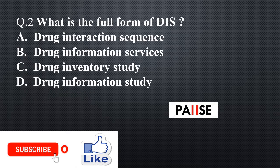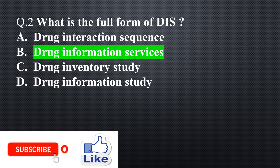Question 2. What is the full form of DIS? Option A: Drug Interaction Sequence, Option B: Drug Information Services, Option C: Drug Inventory Study, Option D: Drug Information Study. The right answer is Option B: Drug Information Services.